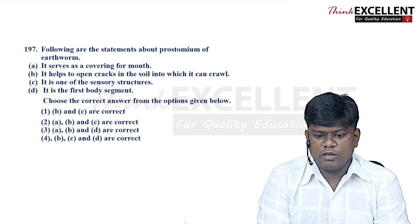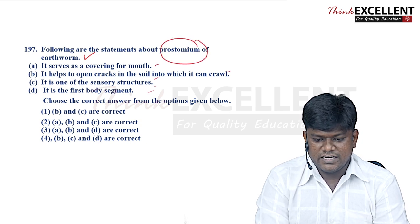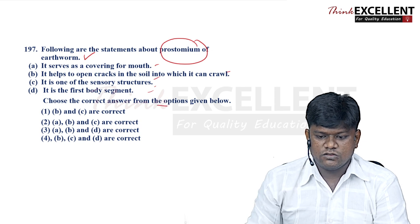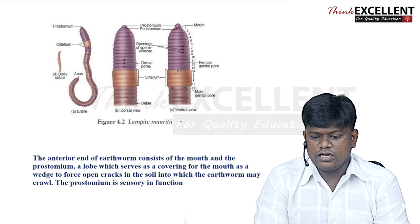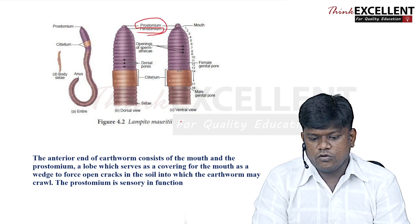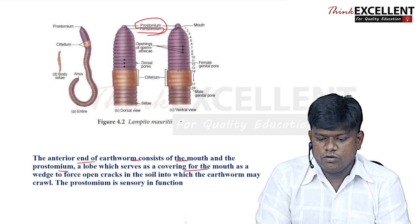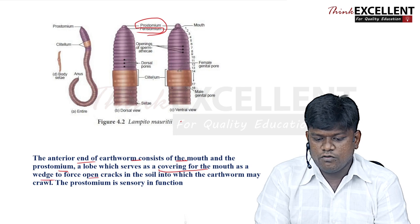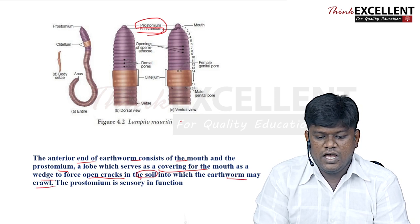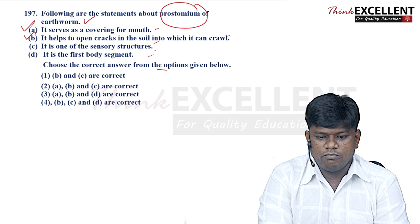Question 197: statements about the prostomium of earthworm (Lumbricus). The prostomium is located at the anterior end of the earthworm, covering the mouth. It acts as a wedge to force open cracks in the soil for crawling and also has a sensory function. Option 2 — statements A, B, and C — is the right answer.